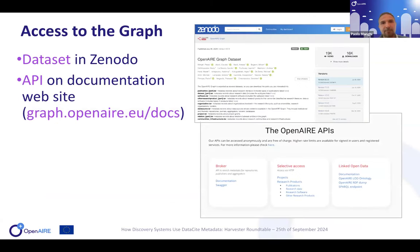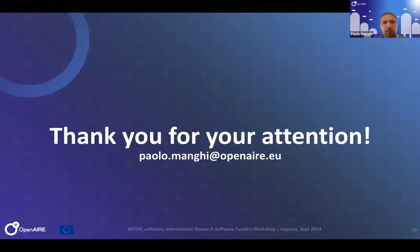You can access the OpenAIRE Graph through datasets in Zenodo, through APIs — and the documentation is quite clear. We're now releasing a new API under testing with several users worldwide, and we'll hopefully release it in November. Thank you very much.